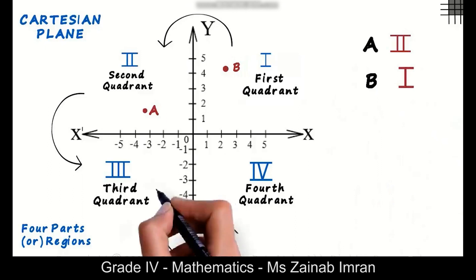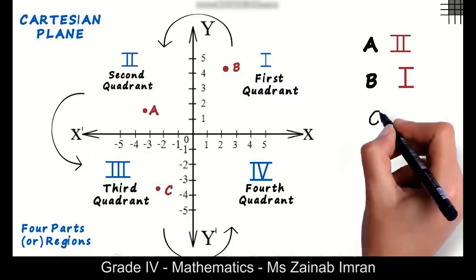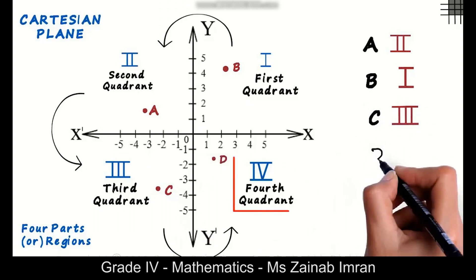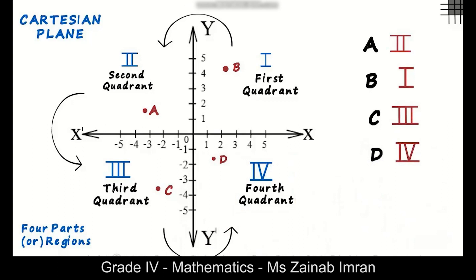Point C is marked here. As it lies in the third quadrant, we write C III. And this is point D. It is in the fourth quadrant.